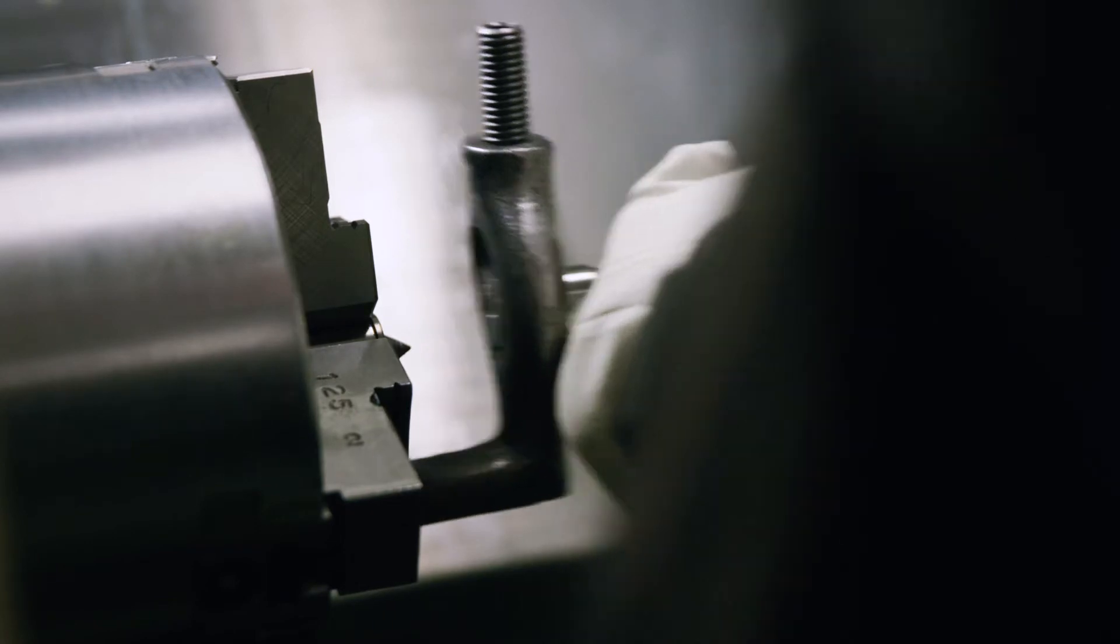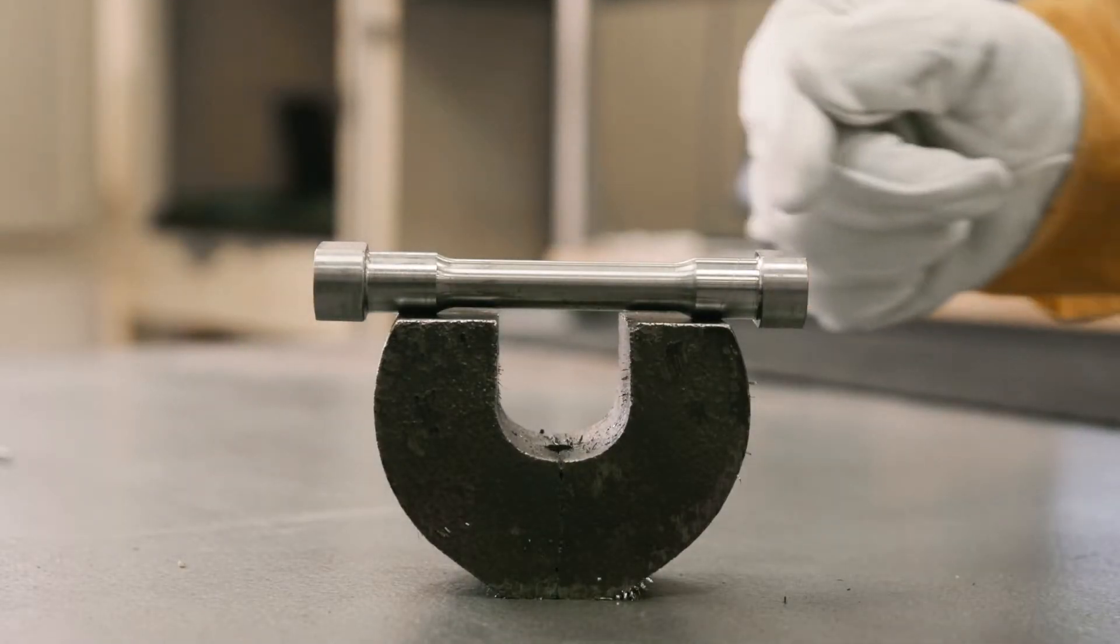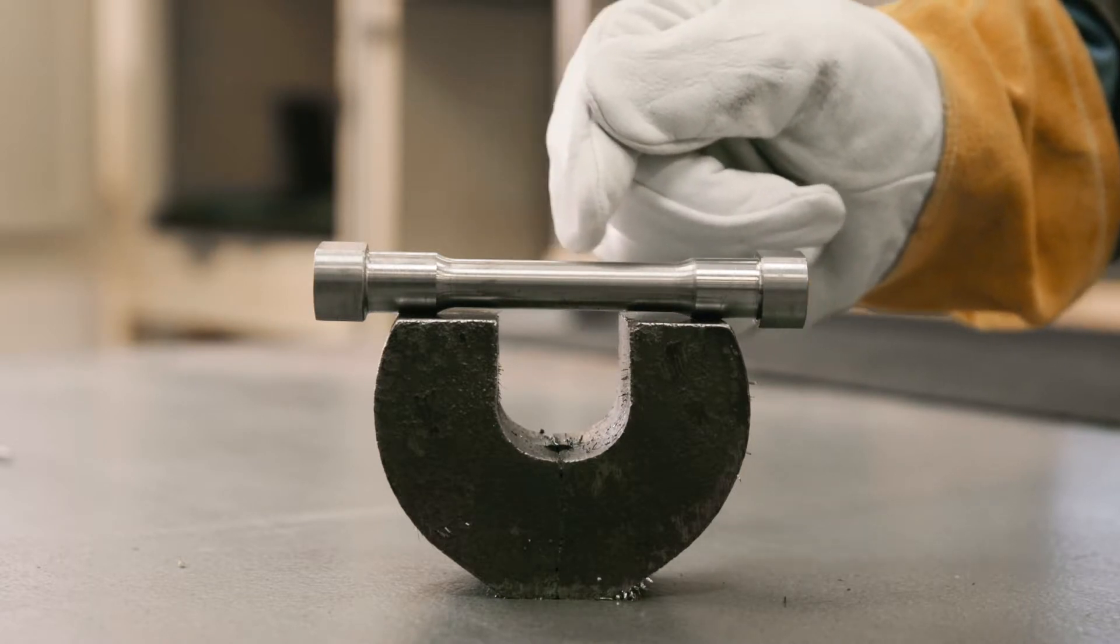The dimensions, length and diameter of the completed tensile specimen are given in the appropriate specification. For products tested to AWS specifications, the tensile specimen is typically 500 and 5 thousandths of an inch in diameter at its smallest point.